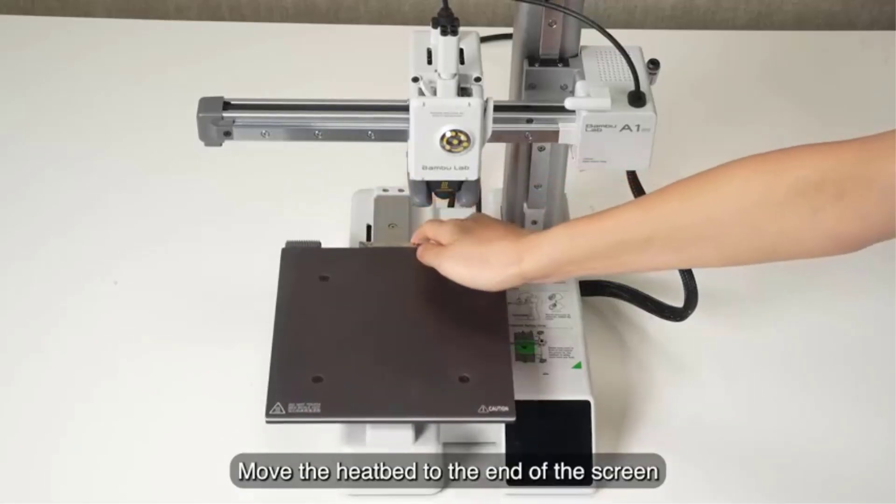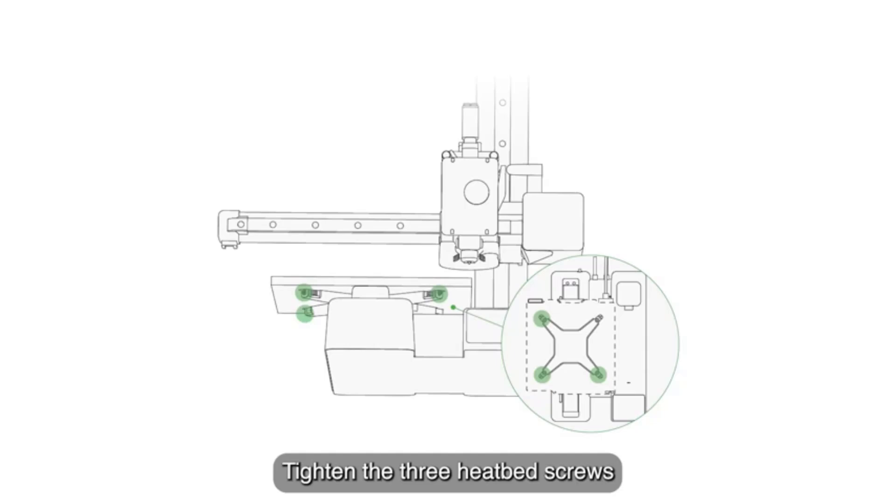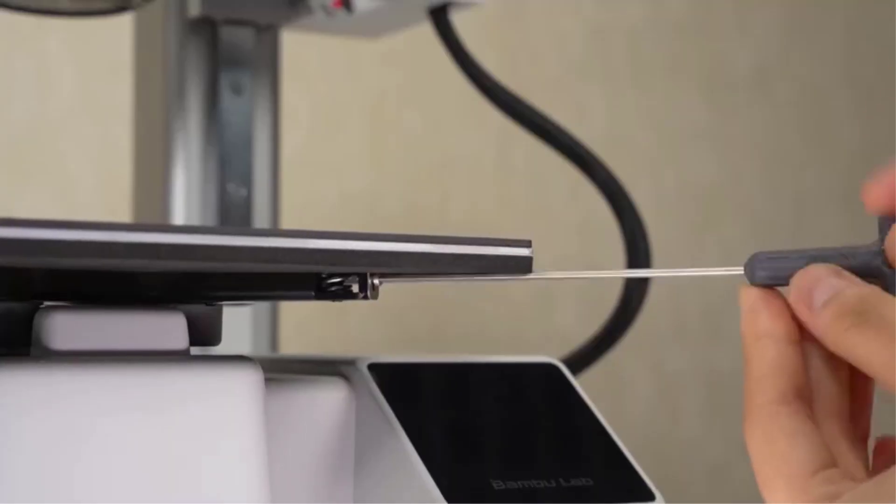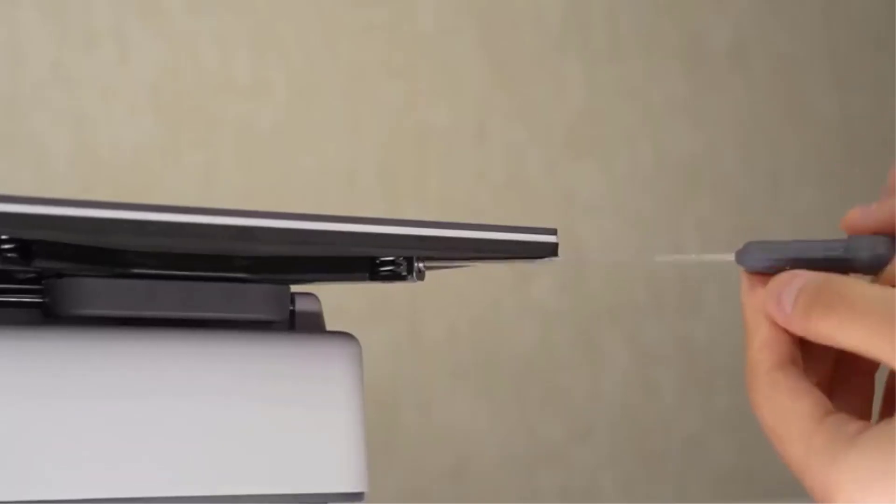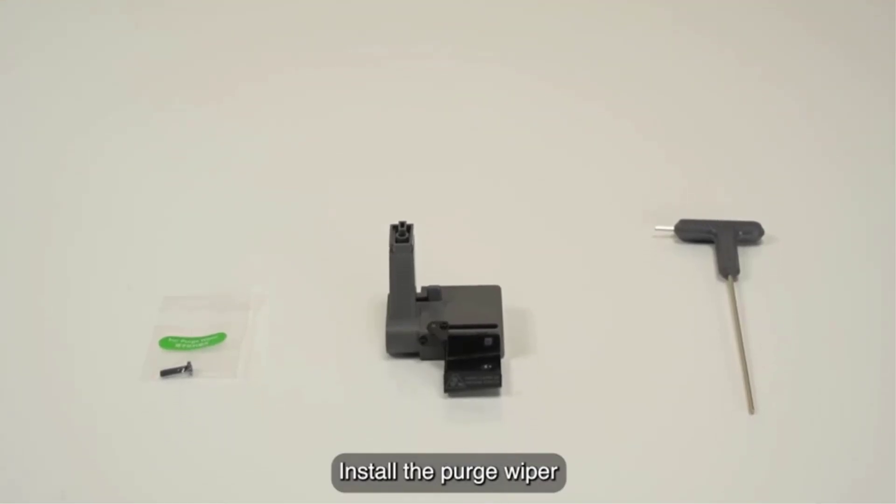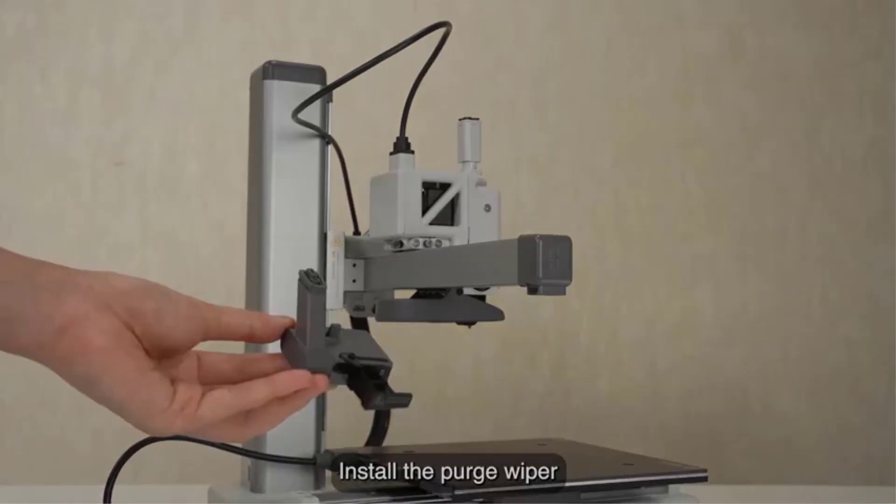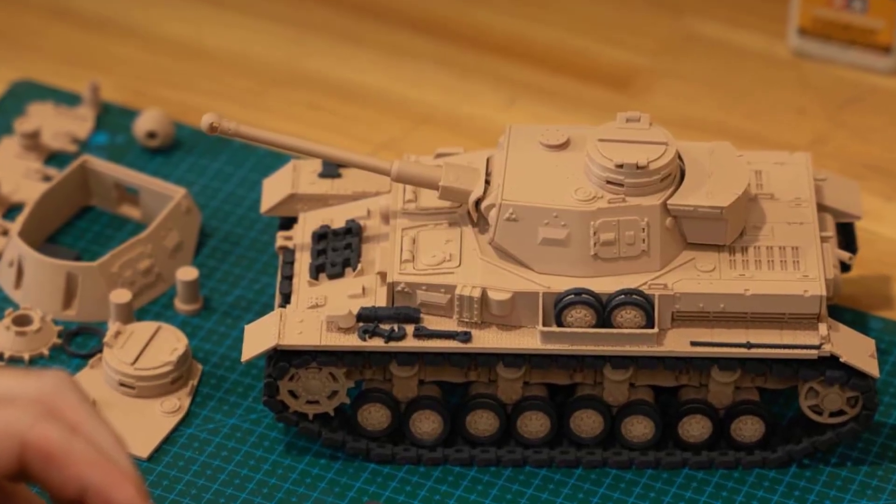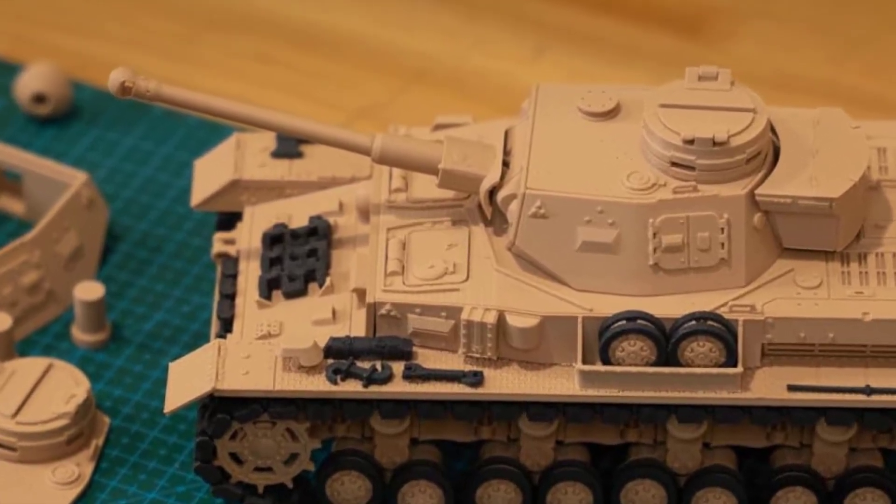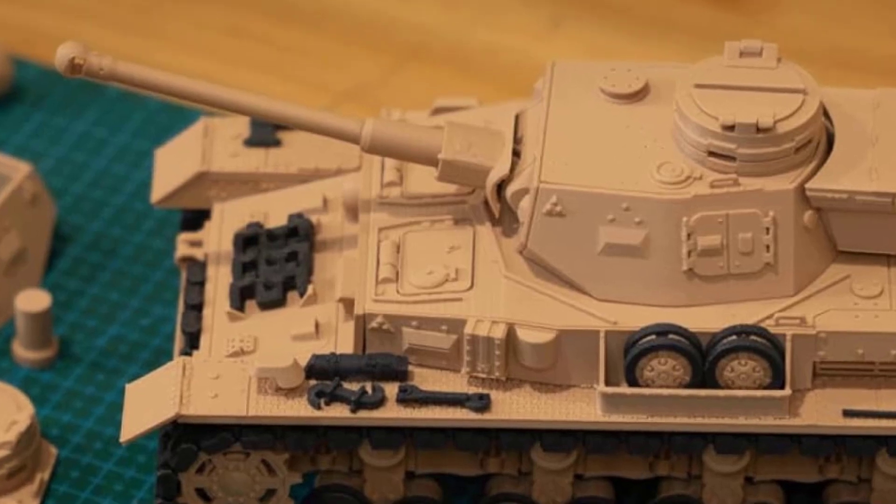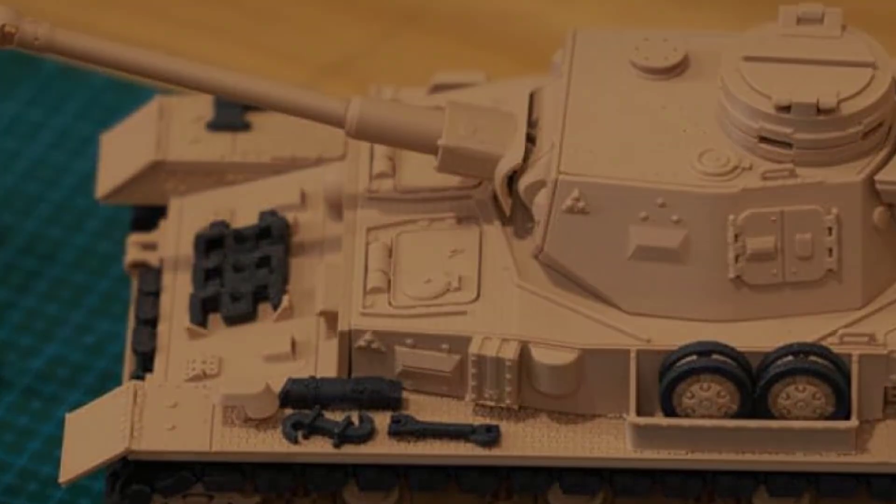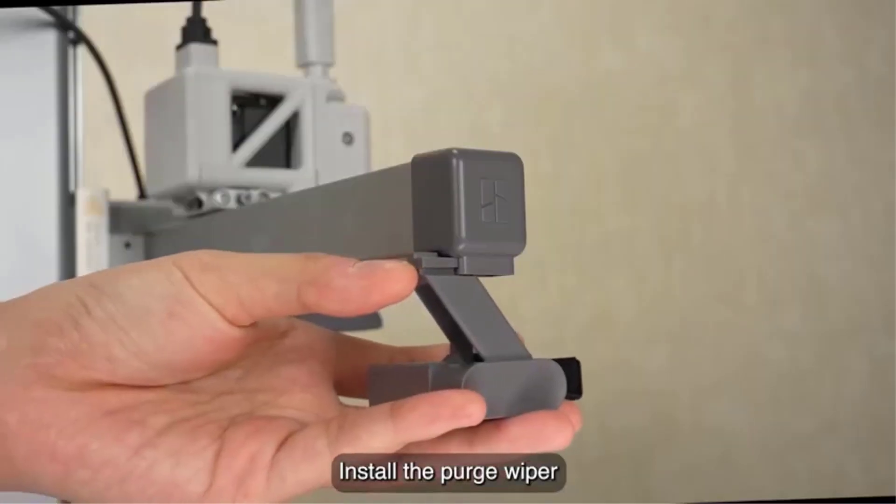Designed with a low-noise operation of less than or equal to 48 dB, this printer is one of the quietest in its category, making it ideal for home, office, or classroom environments. The sturdy construction and vibration compensation system further improve print stability, reducing errors and ensuring consistent performance. The Bamboo Lab A1 Mini is compatible with various filament types, including PLA, PETG, and TPU, expanding its versatility for different applications. The user-friendly interface and seamless connectivity options allow for easy print monitoring and management.